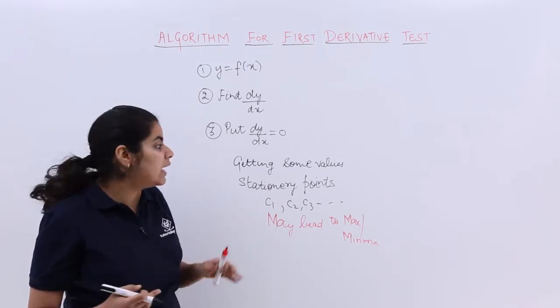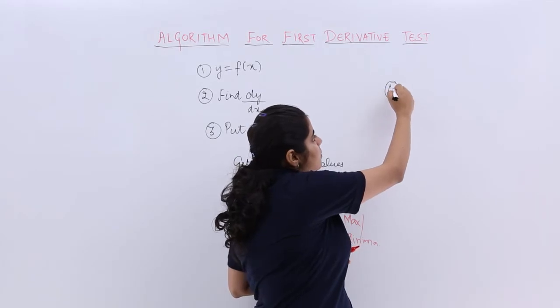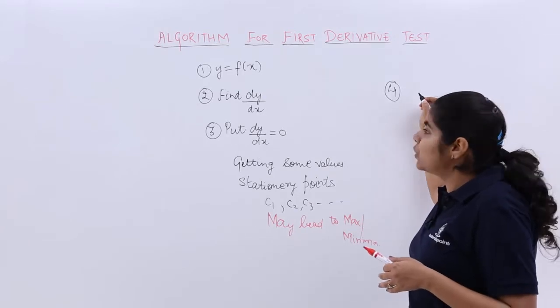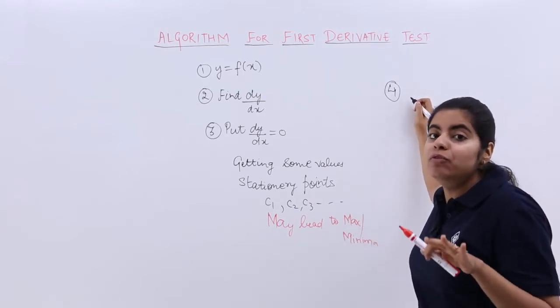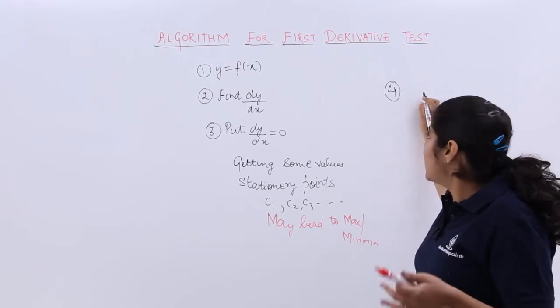You have to then move forward with checking whether out of these all three or say six or say five of the stationary points or the critical points, which one gives you the maxima or minima. For that checking purpose, to check which one has been giving me maxima or minima, you will be actually moving on to the stage wherein you have to check whether my dy by dx or my f prime of x changes sign.